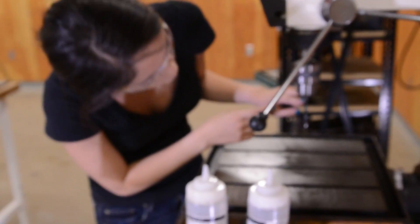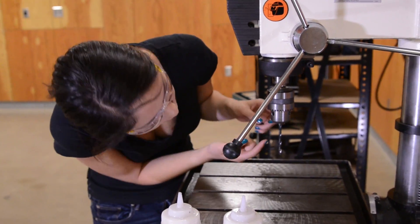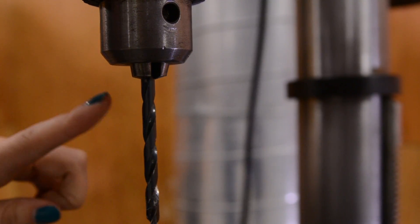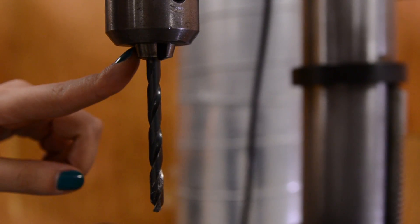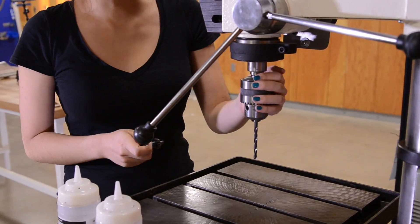Once you have your bit nicely in here, and you want to make sure that your cutting edges are not in the chuck, so you can see I just barely didn't make it in. So make sure that your cutting edge is not inside of the chuck.